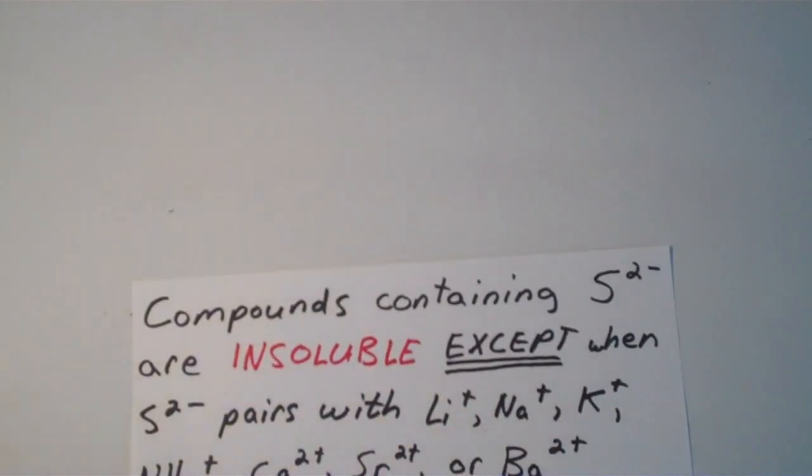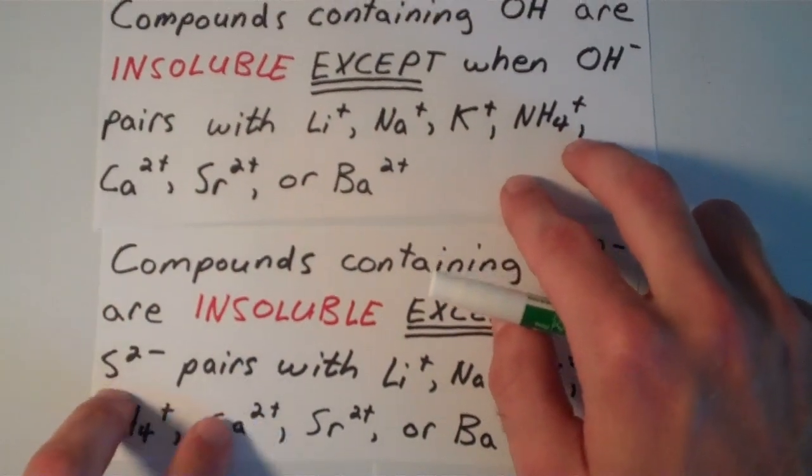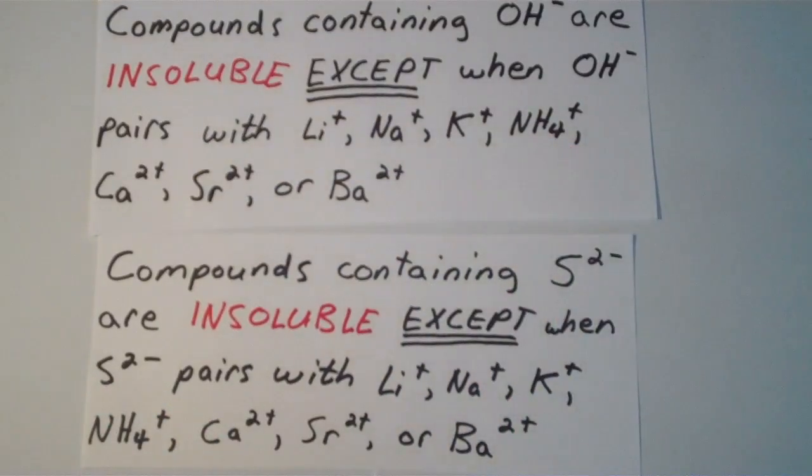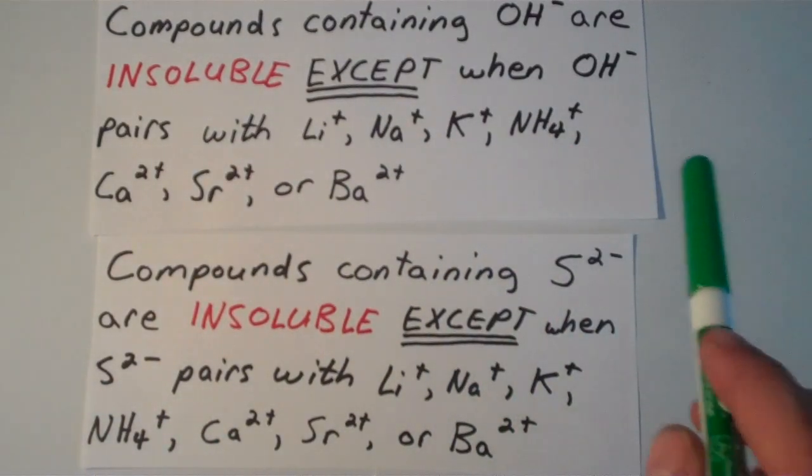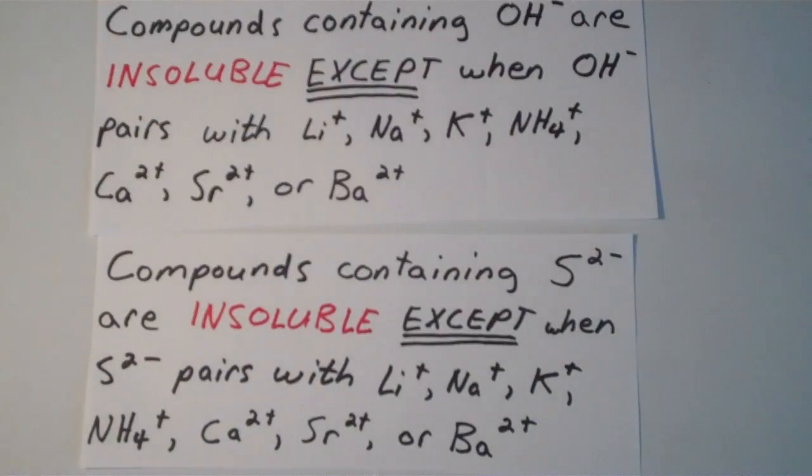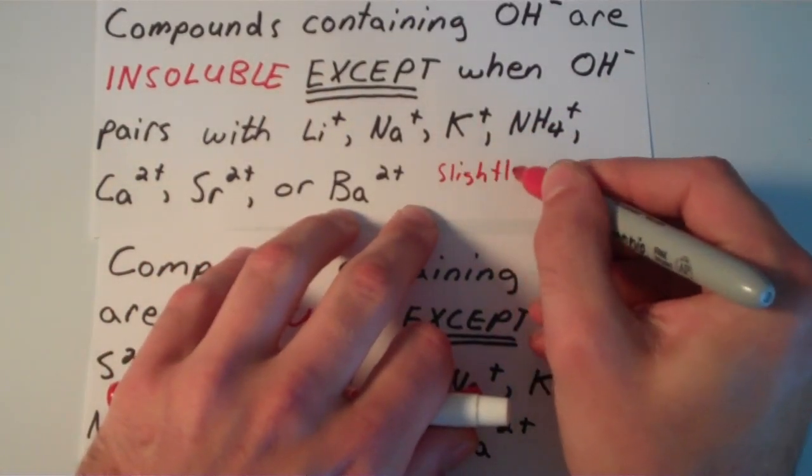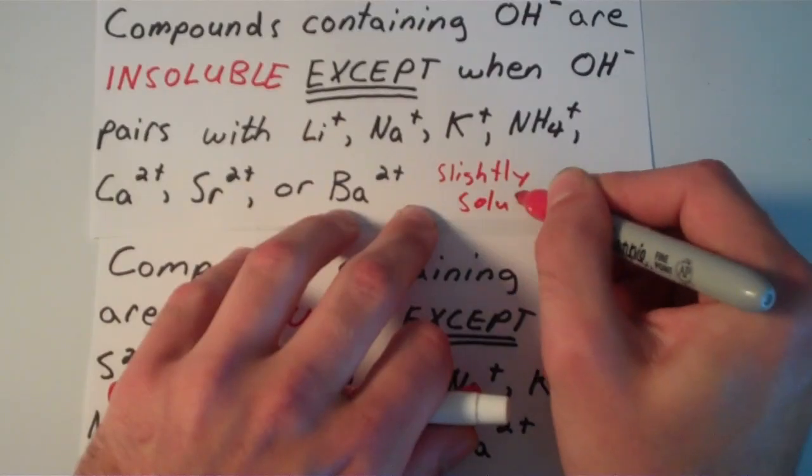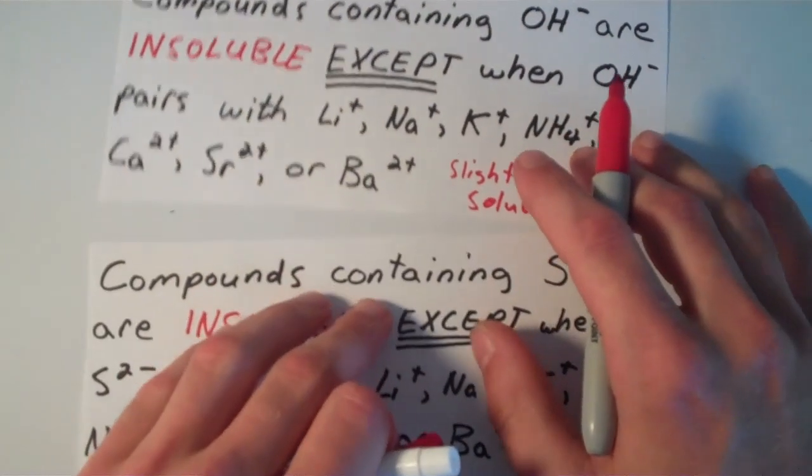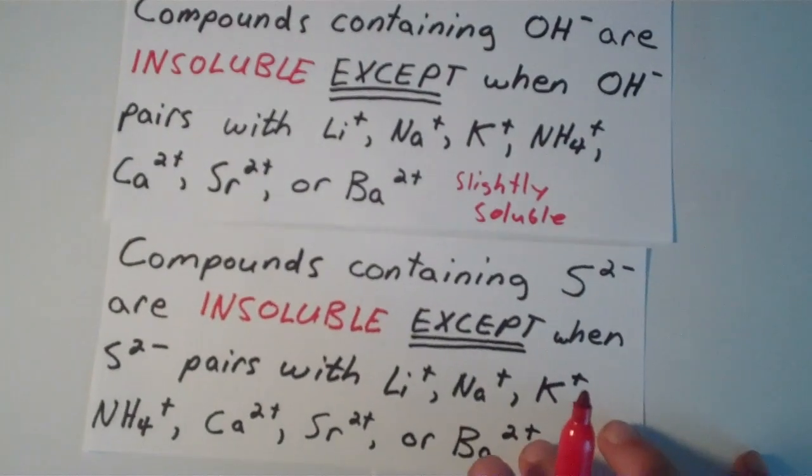The rule for the sulfate ion is actually very similar to the rule for the hydroxide ion. The same ions are listed. The only difference, however, is that when the hydroxide ion pairs with calcium, strontium, or barium, the resulting compound is said to be slightly soluble. Slightly soluble means not quite soluble, not quite insoluble, just somewhere in between.